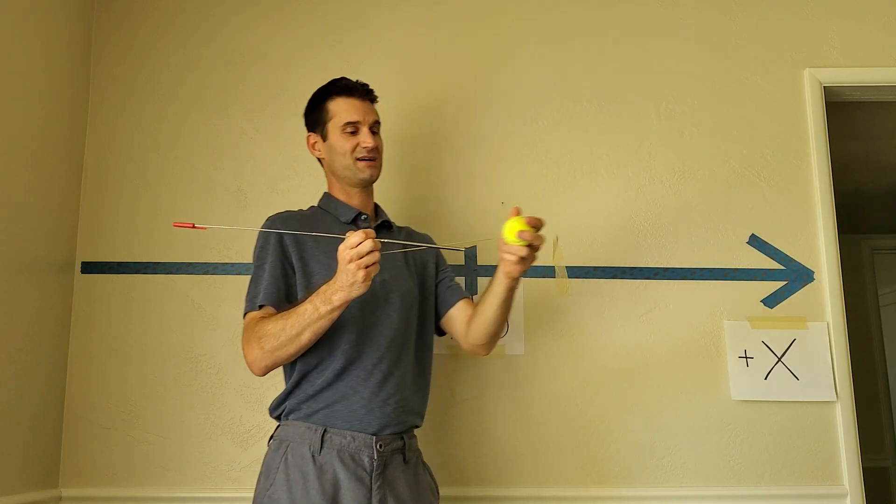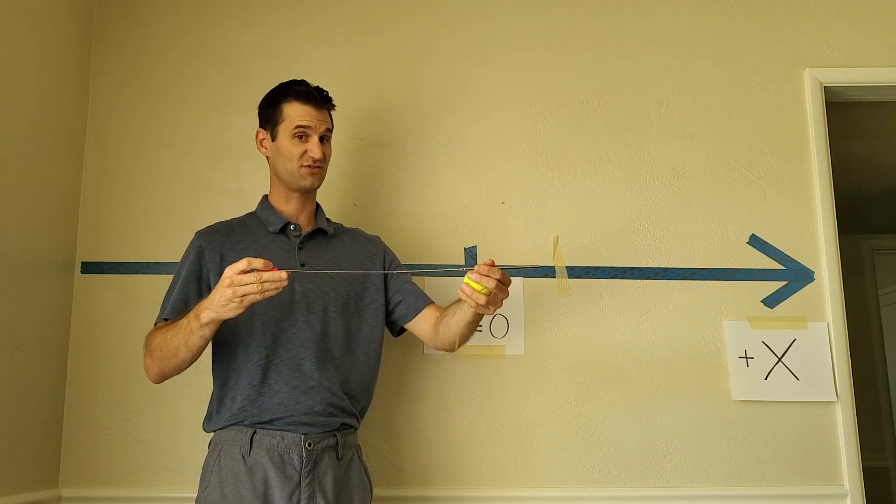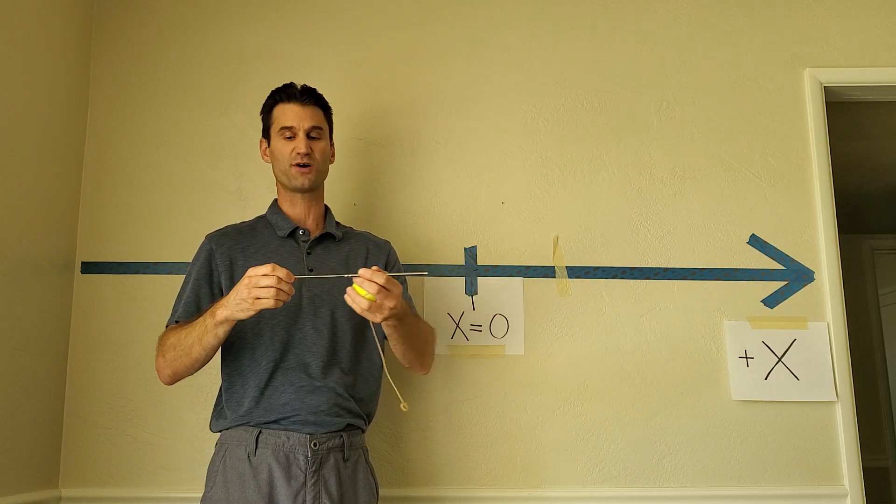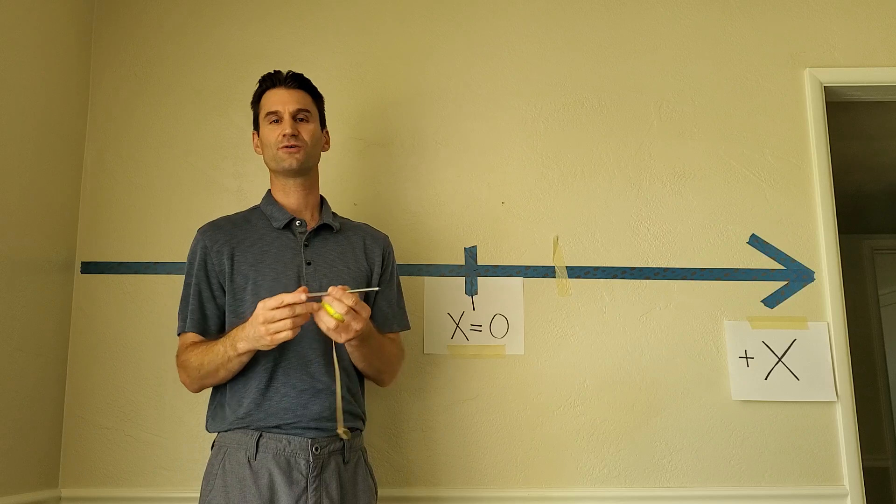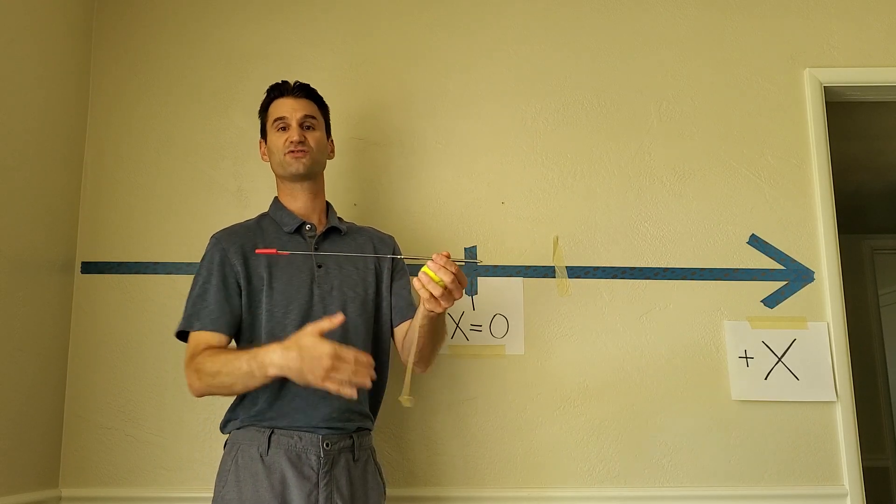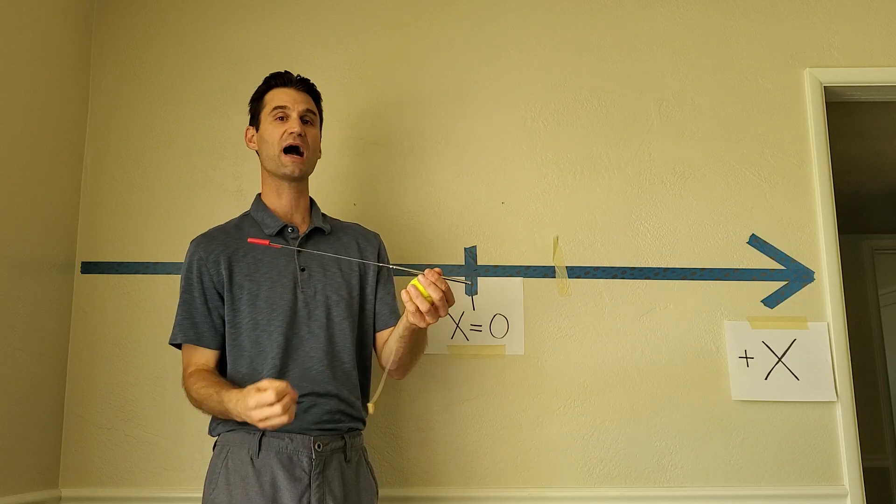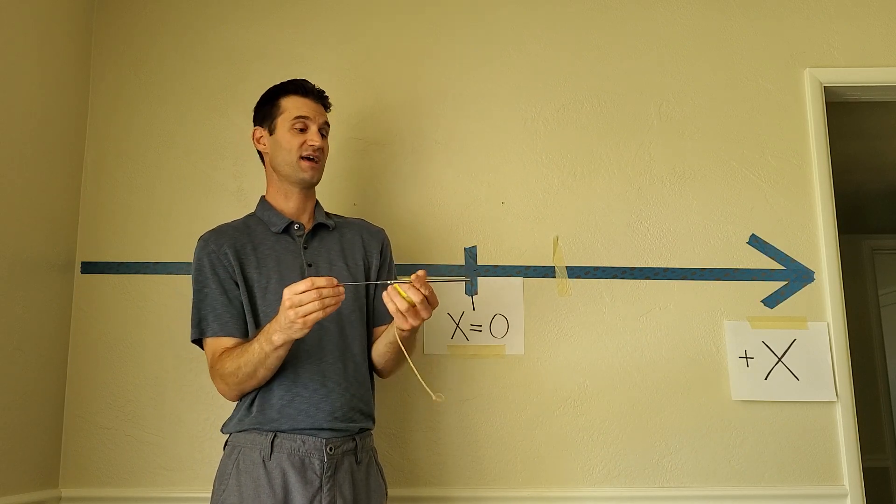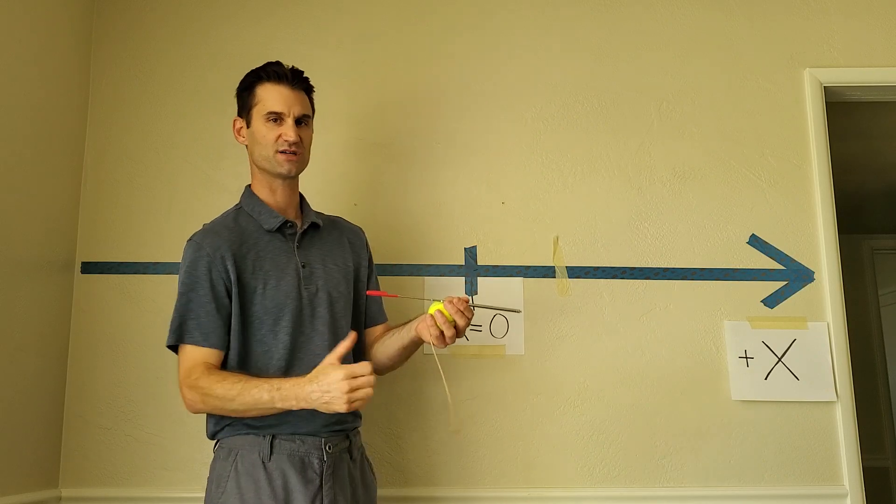And then as it comes back, the rubber band decreases. Acceleration is still pointed in the negative direction. It's smaller, smaller, smaller, smaller. And so in this case, the arrow for acceleration, the length of the arrow is describing how much acceleration, how many meters per second squared, and the direction in this case always pointed in the negative direction.